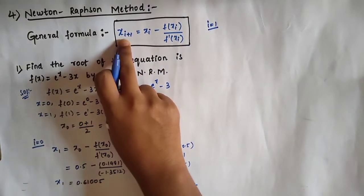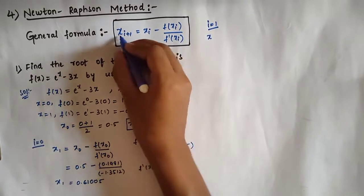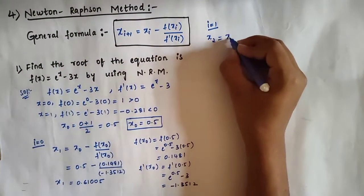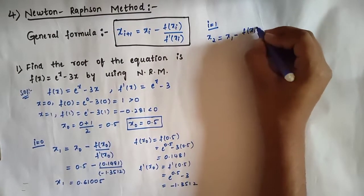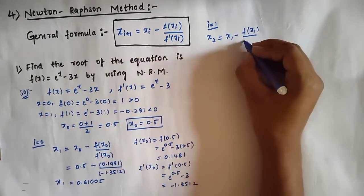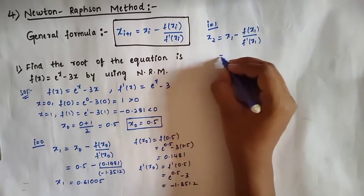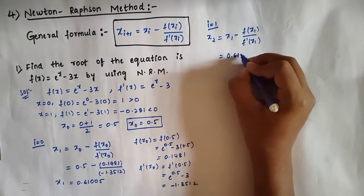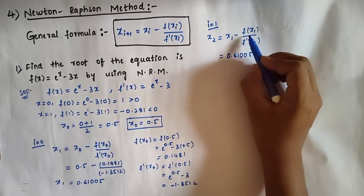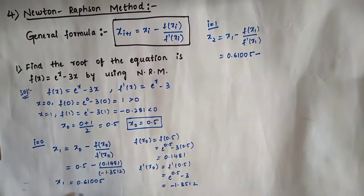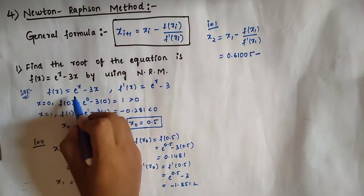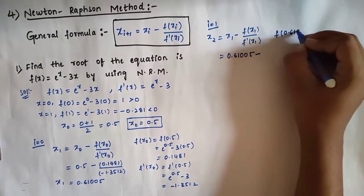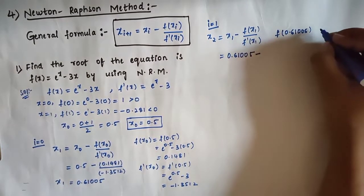Now we substitute i = 1 in the formula, giving x₂ = x₁ minus f(x₁) divided by f'(x₁). The x₁ value is 0.61005. We need to evaluate f(x₁) = f(0.61005) = e^0.61005 minus 3×0.61005.